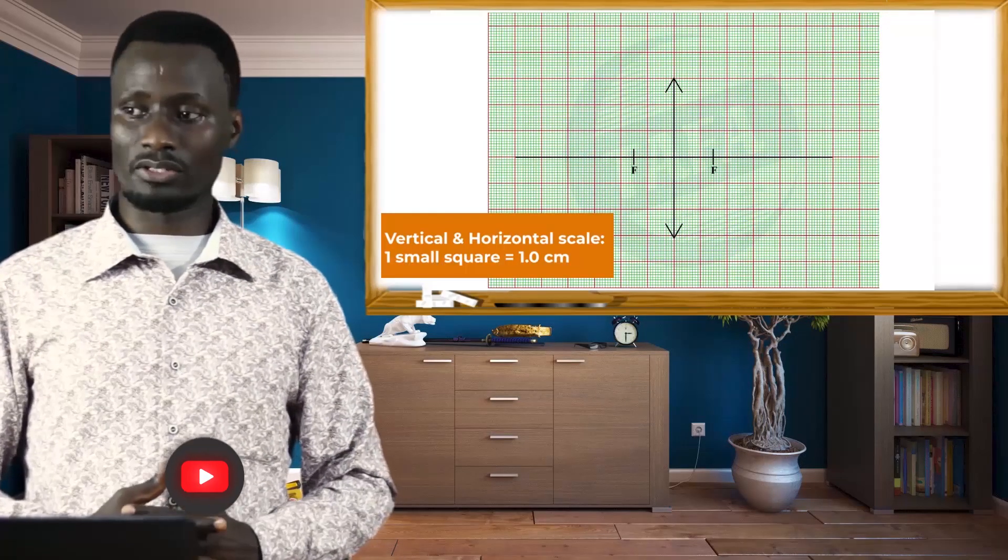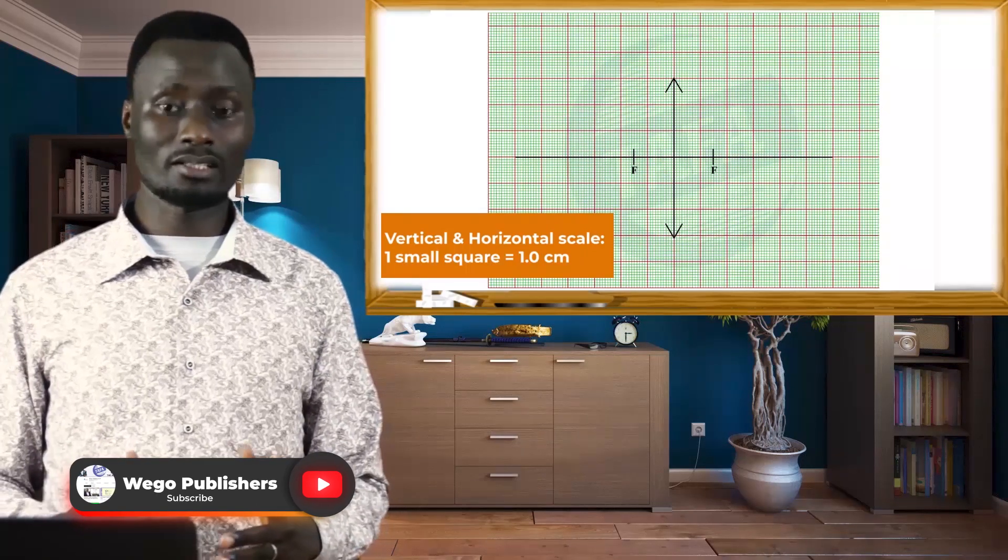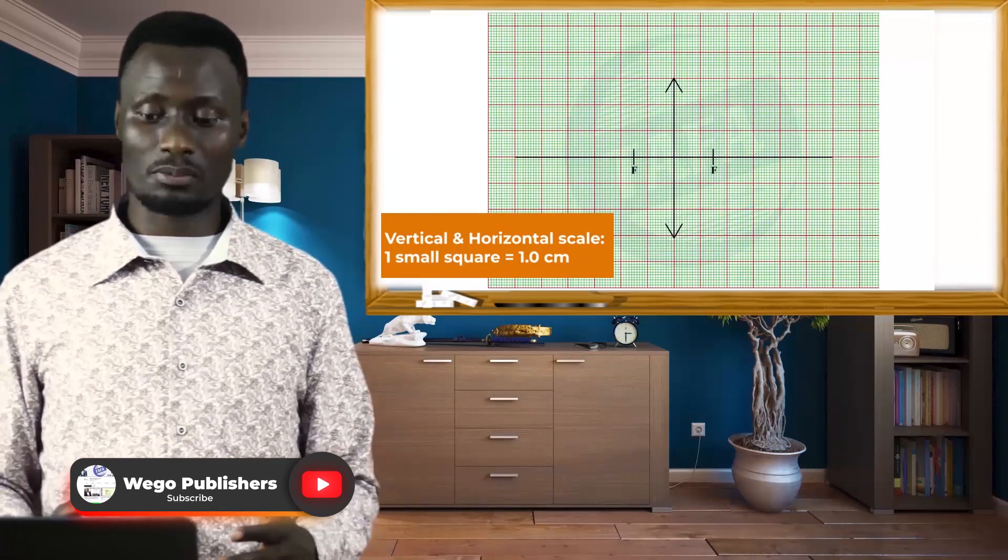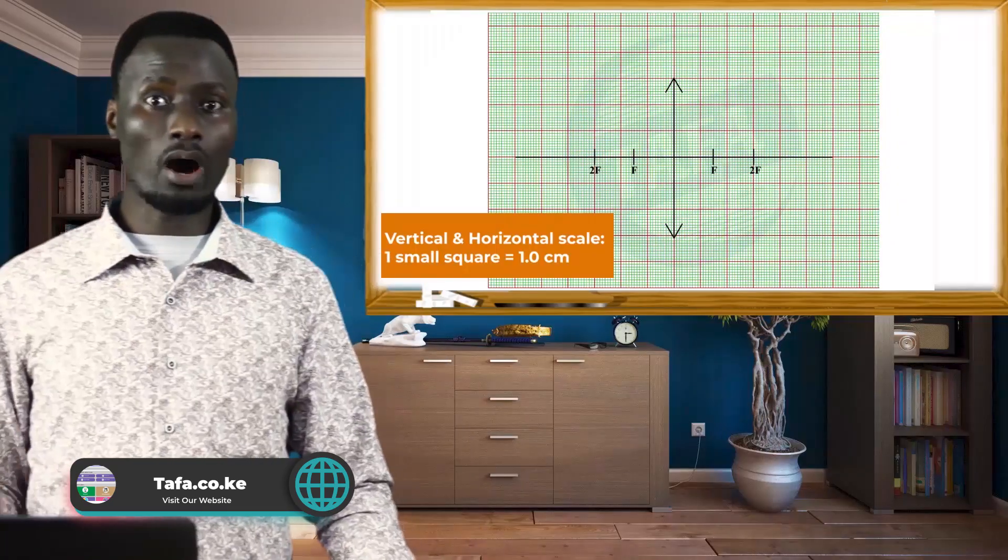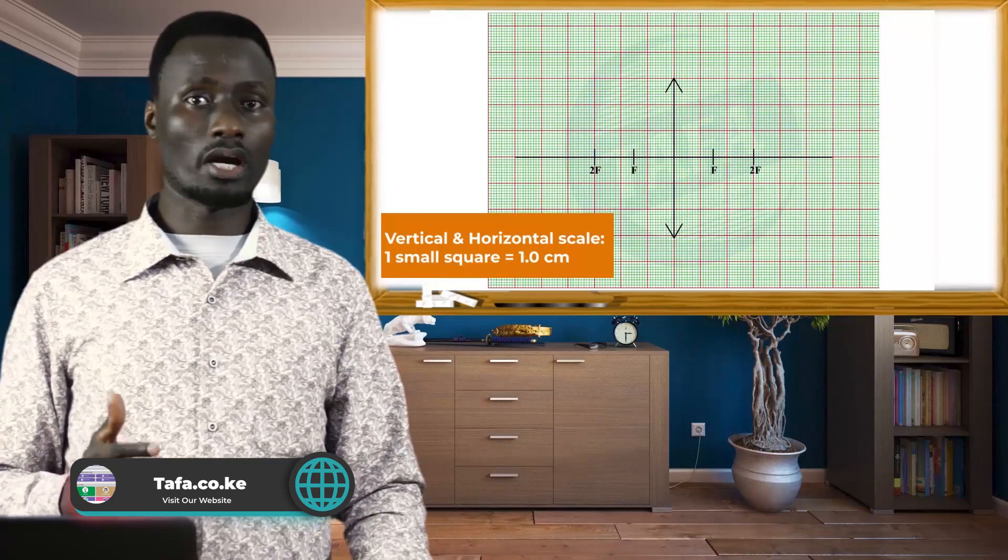The center of curvature will be 30 centimeters, which is 30 small squares from the lens on either side as well. And then now we position the object O.